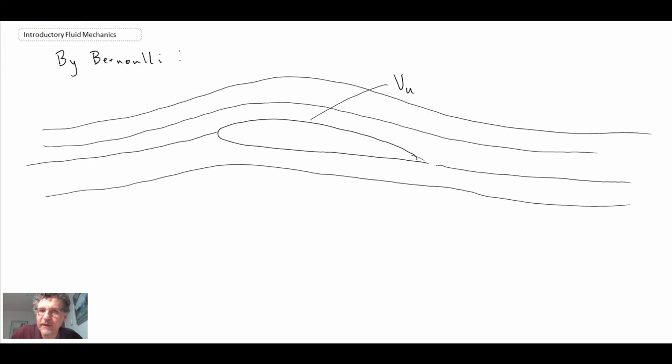And there are a number of different ways that you can explain that. Some people say that the fluid has to take a longer path on the top. That's kind of a junior type of approximation. Really what's happening is you get circulation that is built up due to the flow around the airfoil. And that gives you a net lift as a result of the circulation. And that would be something that you would study in a more advanced course in fluid mechanics. But V upper is a higher velocity.